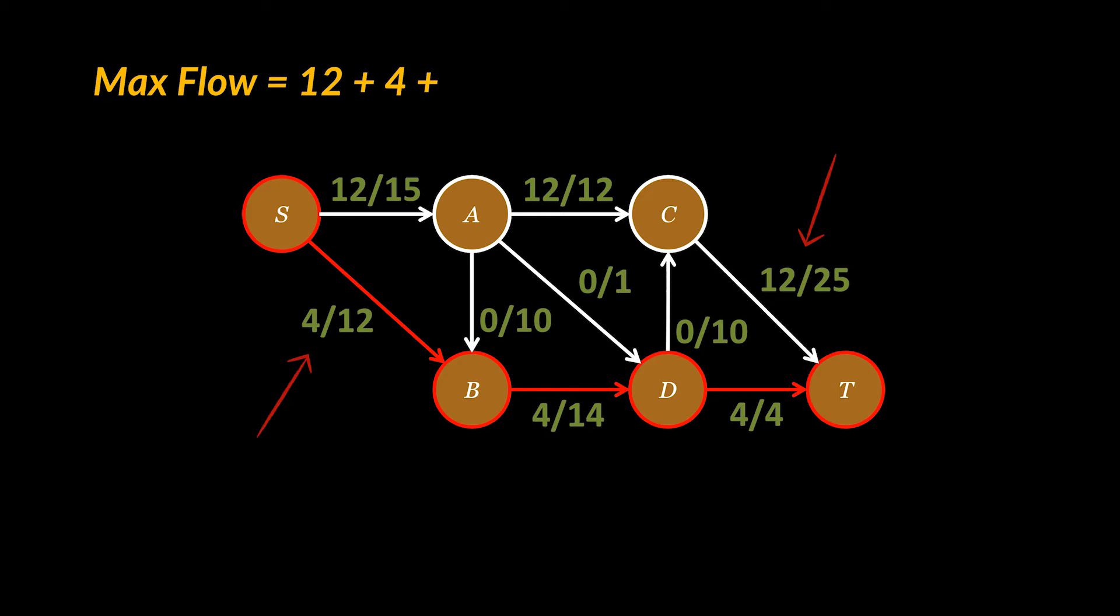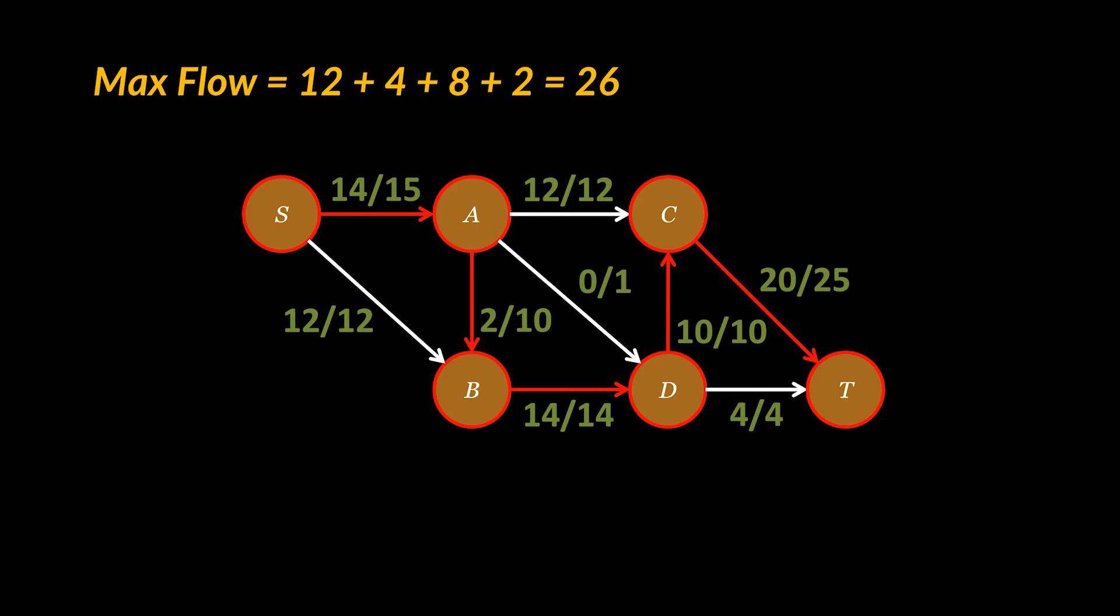Notice how we always keep track of the units that are already flowing through the pipes. You should imagine water flowing in all directions through all the edges at the same time. Now take a look at this path. Eight additional units can go through here as the maximum we can still flow from S to B is eight.